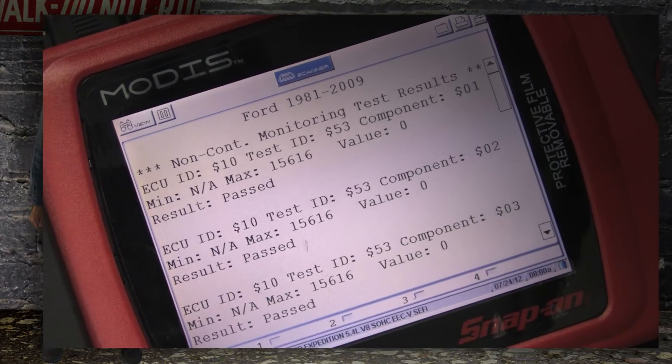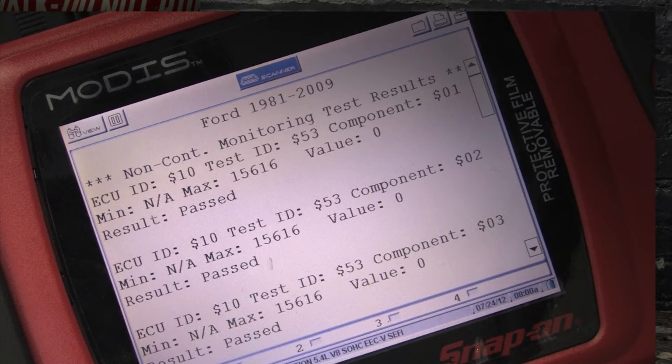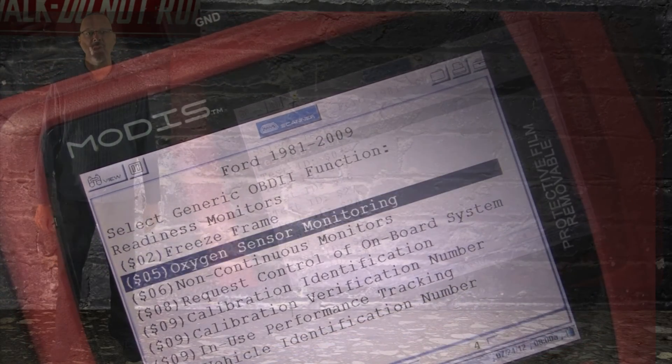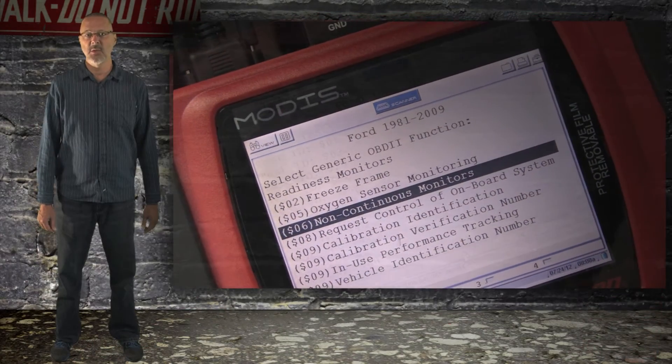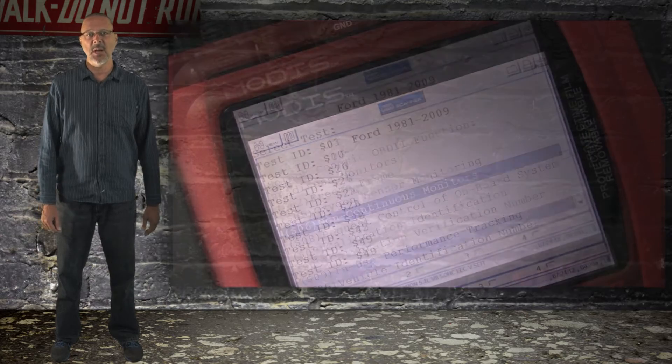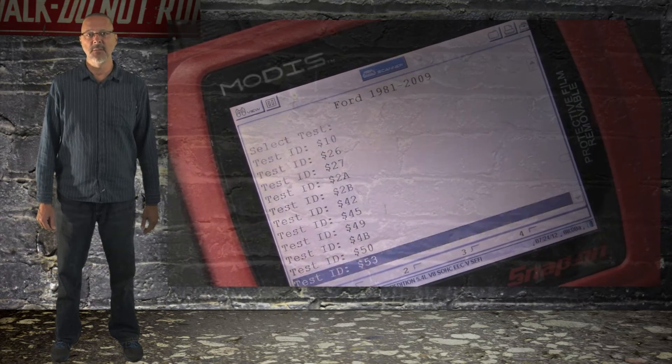On this particular Ford, even if you have a capable scan tool, you can use Mode 6 to see the misfire counter. To get the Mode 6 misfires using a Modus like this one, go to the generic functions, non-continuous monitors, then go to the test ID, dollar sign 53.